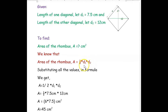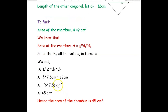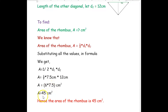From our previous videos, we know that the area of a rhombus formula is A = half × d1 × d2, the half of the product of the diagonals. Substituting: A = half × 7.5 × 12 = 6 × 7.5 = 45. So the area of this rhombus is 45 square centimeters.